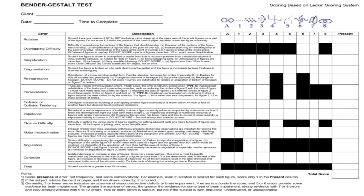After closure difficulty comes Motor Incoordination, observed across all eight cards. Motor incoordination is evident when the client's lines are irregular — there is no consistent flow, lines are broken, going up and down, with heavy pressure applied on the pencil. Behavior observation is also important here — we observe the client's body language and how they are sitting while drawing. We assess and observe this across all cards.